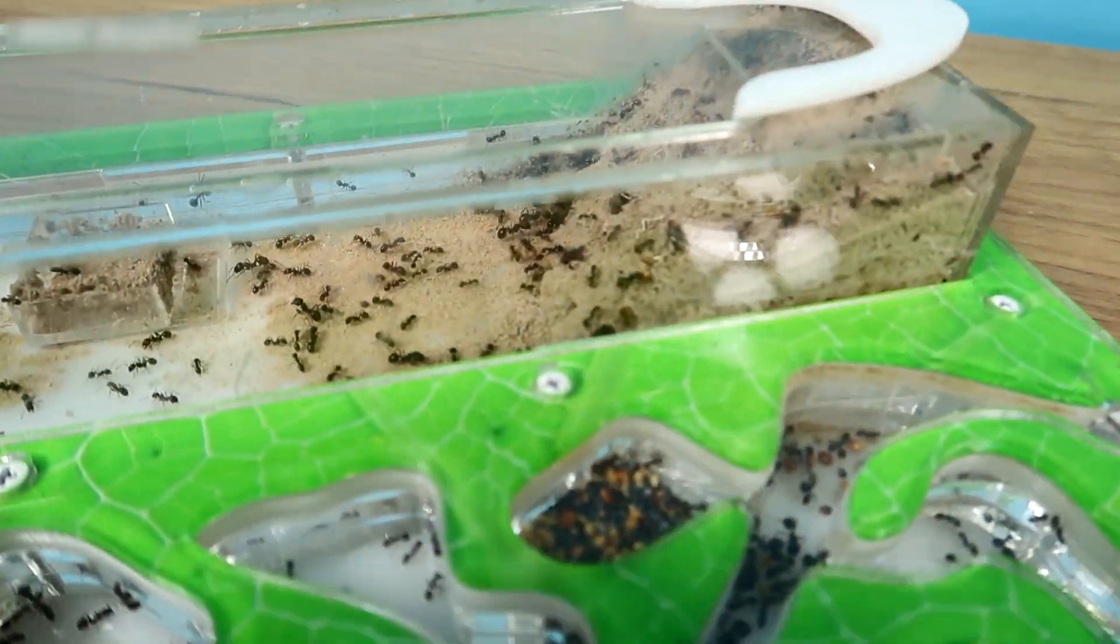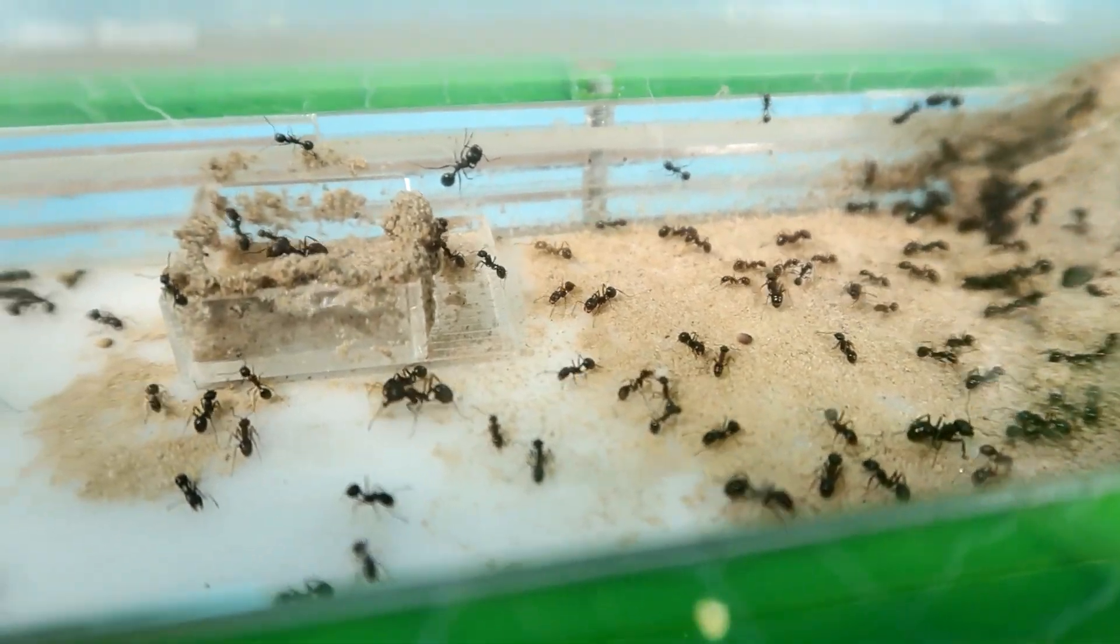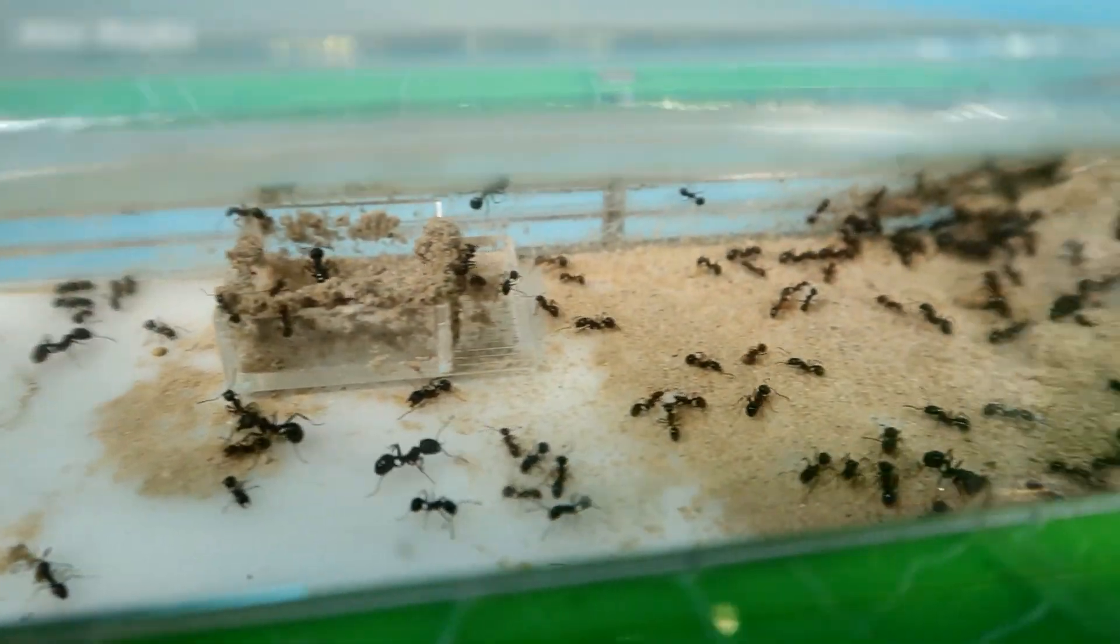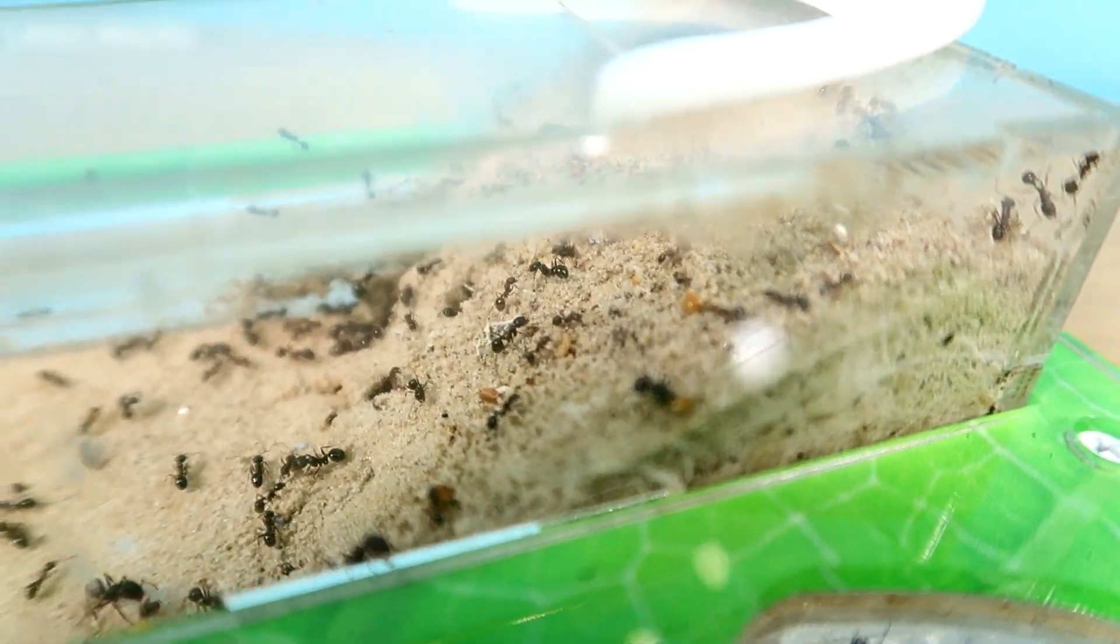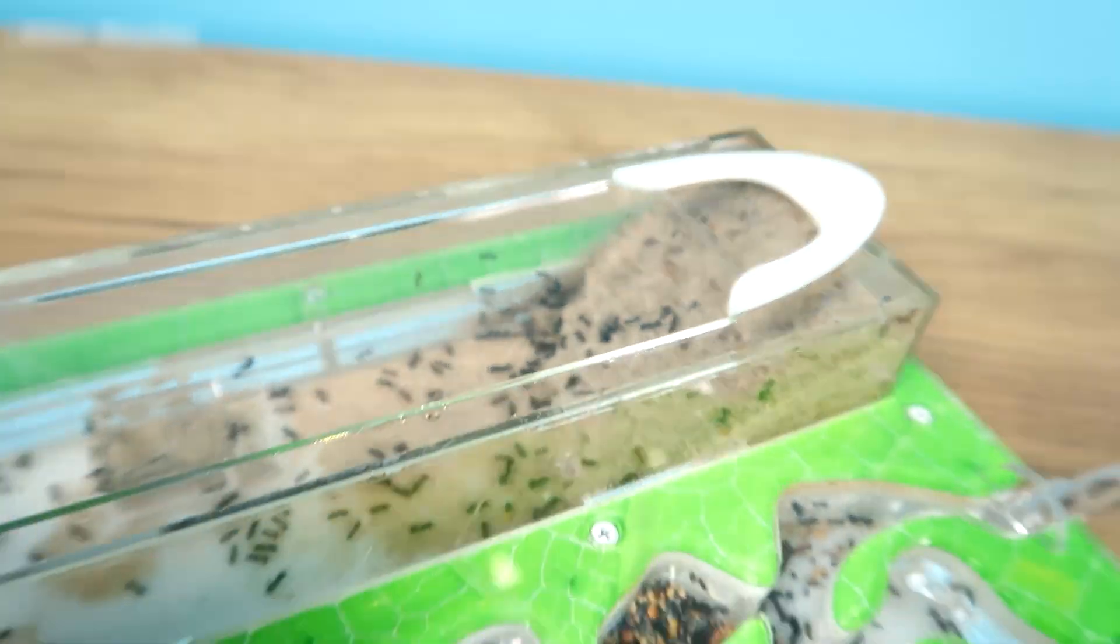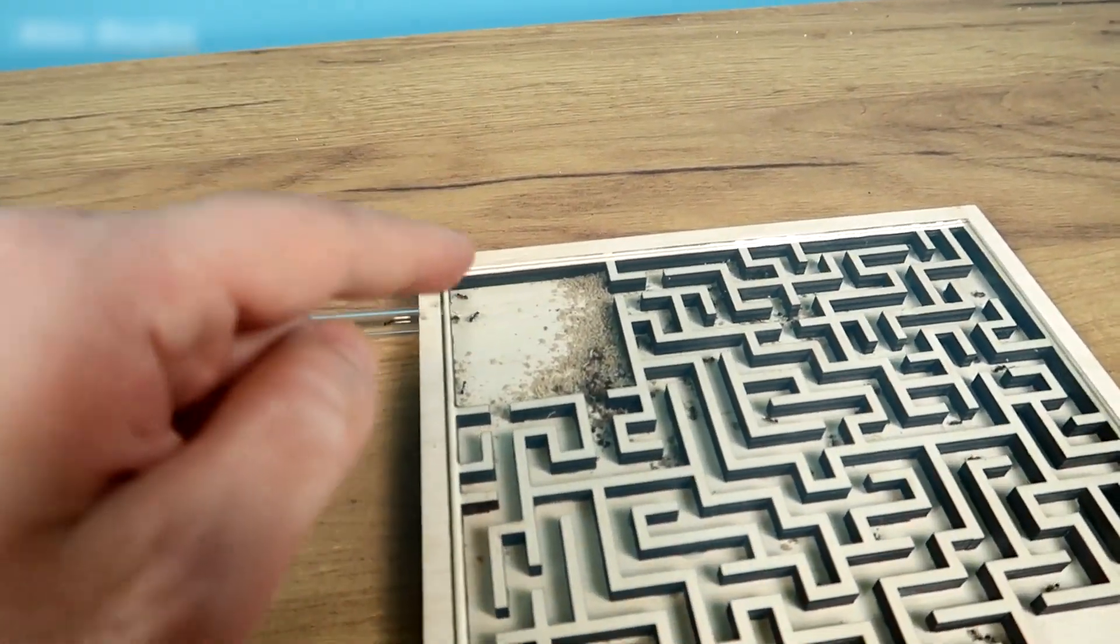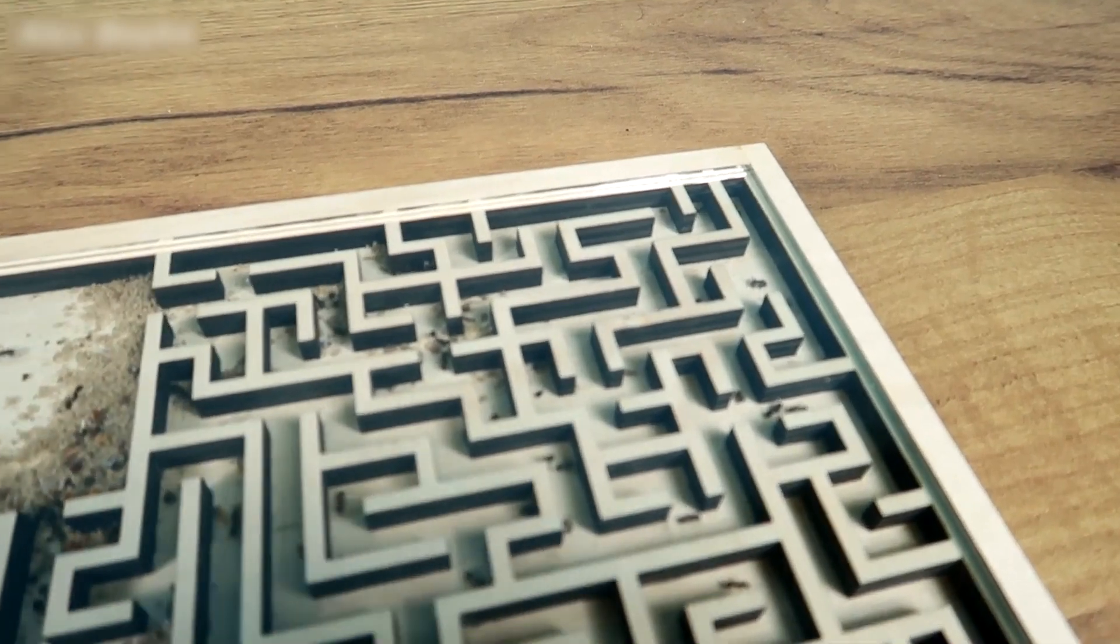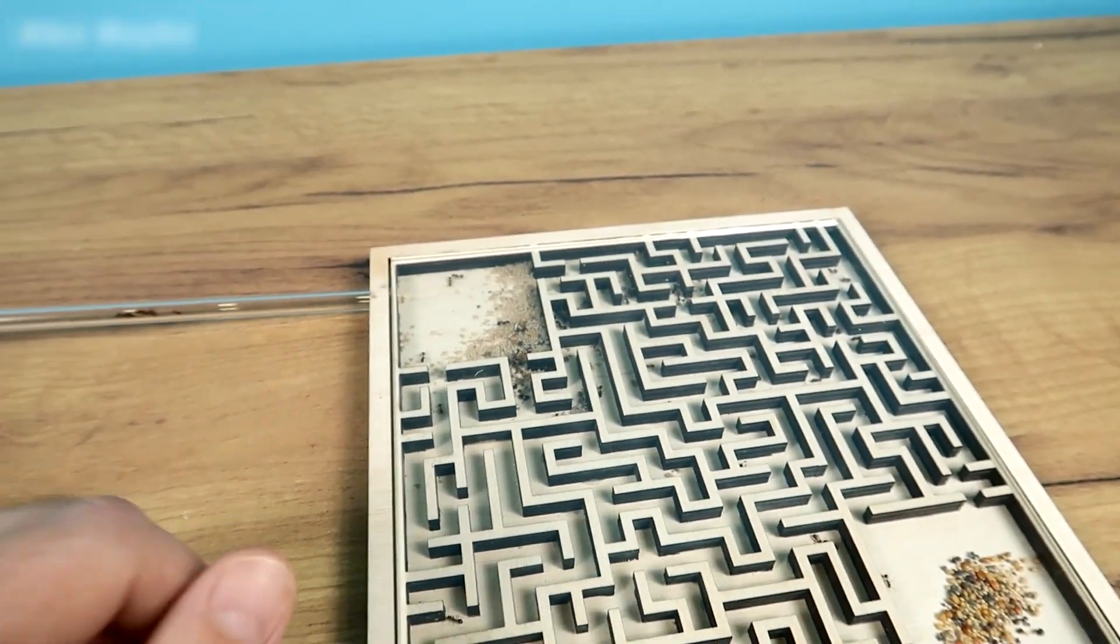Now, let's shift our focus to the formicarium itself. It's impeccably clean. Just look at the sand. There's not a speck of trash. My hypothesis stands confirmed. The ants have taken it upon themselves to clean their habitat, relegating waste to the labyrinth. Hence, the presence of dead ants here is primarily due to natural causes, old age, if you will.